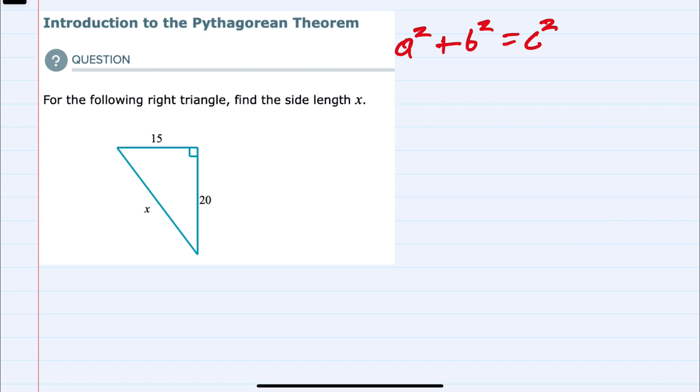We have to recall that both a and b are sides of the triangle and that c is the hypotenuse.